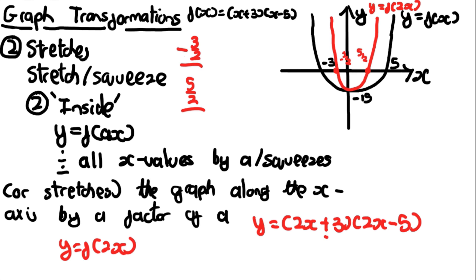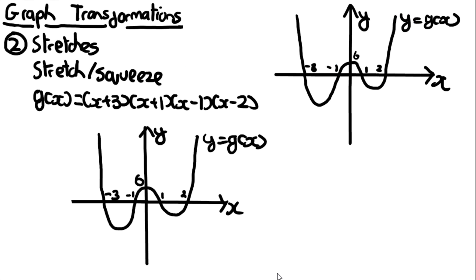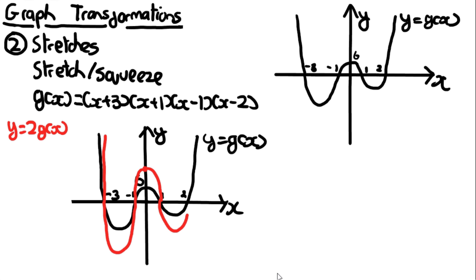They could ask you to transform quartics too. For example, g(x) = (x+3)(x+1)(x-1)(x-2). For y = 2g(x), the y-intercept is multiplied by 2 giving -12, the roots stay the same, and you stretch by a factor of 2. Sketching from the y-intercept, the turning points need to be twice as large. Remember to label it y = 2g(x) with the new y-intercept -12; the roots don't need re-labelling.